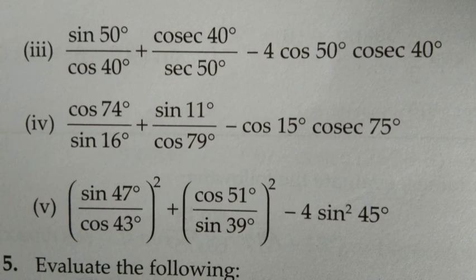For minus 4 sine square 45°, you cannot cancel it because it's not complementary. But sine 45° from the formula we learned is 1/√2. Since it's sine squared, it becomes (1/√2)². After that, it's just numbers and you can solve the rest.